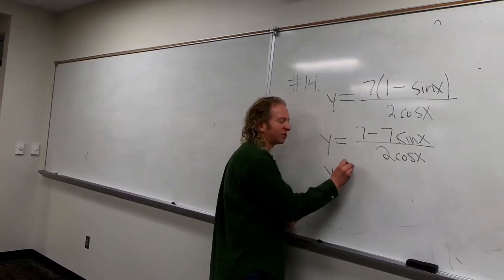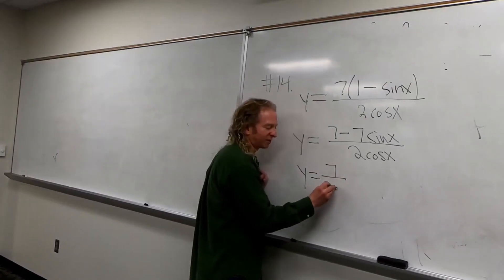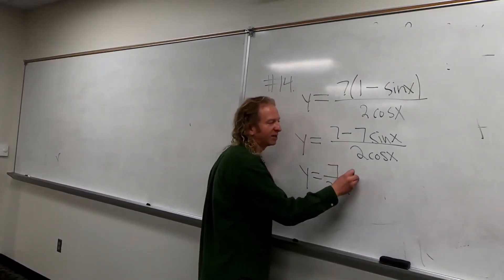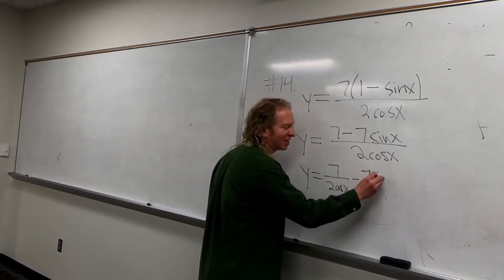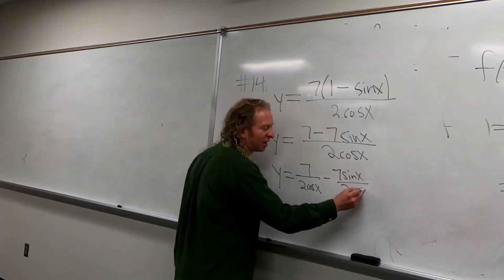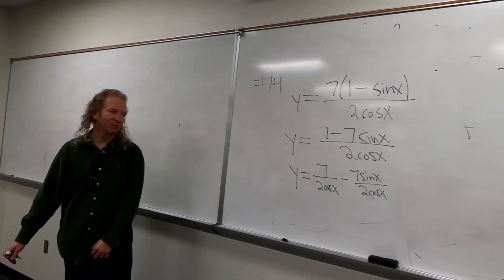So y equals 7 over 2 cosine x, minus... And then I'm not going to write it as 10 yet. I will in the next step. I'm showing some extra steps.